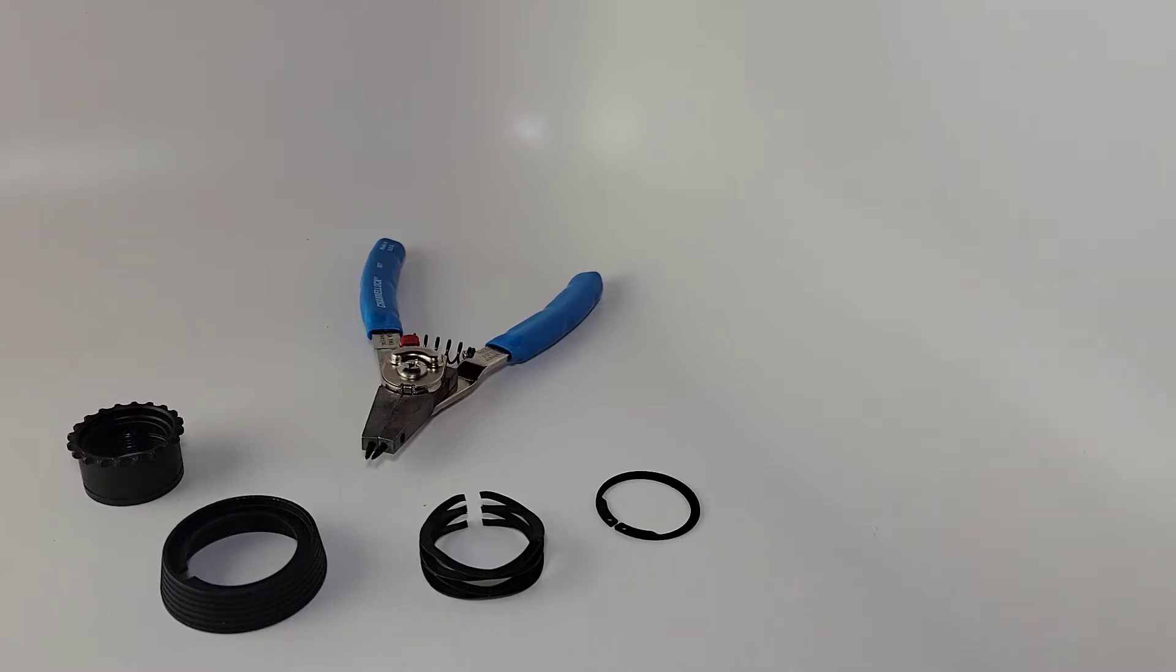Alrighty, we're going to assemble a delta ring assembly. It consists of four parts.